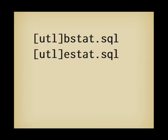A long time ago, Oracle introduced two scripts, bstat and istat, both later prefixed with utl for utility. bstat copies the current values of V$ views to tables and is run before a period of interest. At the end of the period, istat is run — it computes the differences between the current values and those that were saved, and it generates a report.